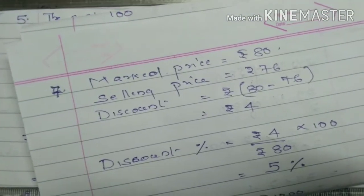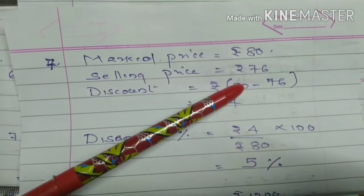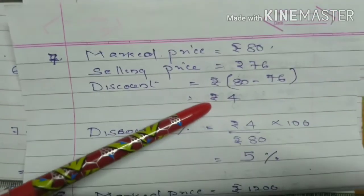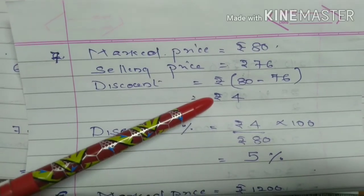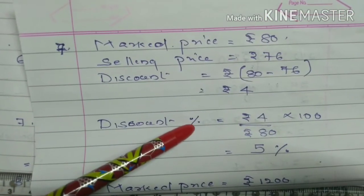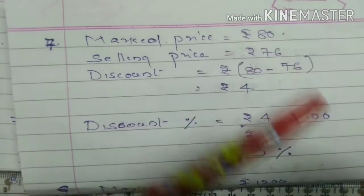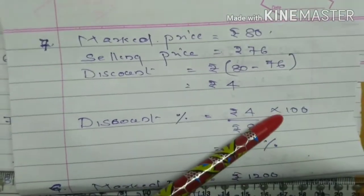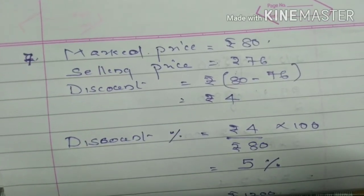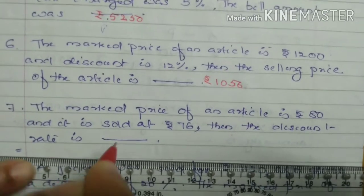The marked price is Rs. 80 and the selling price is Rs. 76. So first we find the discount amount: Rs. 80 minus Rs. 76 equals Rs. 4. Then the discount rate means percentage: discount amount upon original, so 4 upon 80 into 100. When you simplify, you get 5%. So the discount rate is 5%.